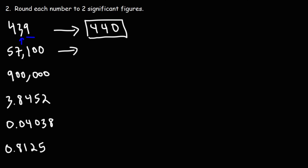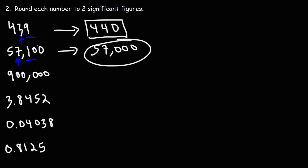For the next one, 57,100 — the second significant digit is a 7. To the right, we have a 1, so we round down. 57,100 rounded to two significant figures is 57,000. Writing it this way, we have two significant figures, and these two numbers are very close in value to each other.